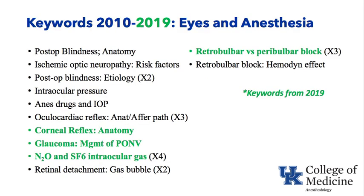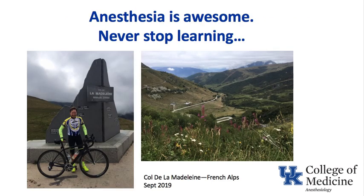Over the last decade of Eyes in Anesthesia keywords: we covered blindness, drugs and their effect on intraocular pressure, glaucoma and scopolamine and acute angle closure glaucoma, nitrous oxide and avoiding it with sulfur hexafluoride gas, and retrobulbar versus peribulbar blocks and their complications — including the fact that a retrobulbar block could have major hemodynamic effects if local anesthetic tracked back along the optic nerve sheath and anesthetized the brainstem. This ends this short keyword presentation on the topic of eyes in anesthesia.